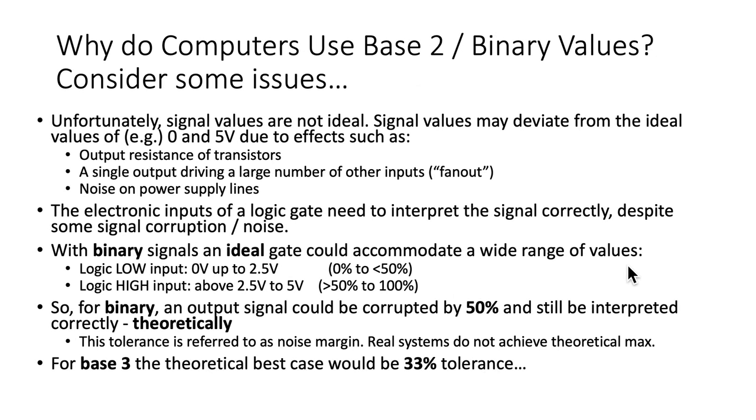So why do computers use base 2 or binary? Well, here are some issues to consider. Unfortunately, single signal values are not ideal. Signal values may deviate from ideal values of, for example, 0 and 5 volts, due to a variety of effects such as the output resistance of transistors, a single output driving a large number of other inputs (that's referred to as fanout), and noise on power supply lines, which is often quite prevalent in digital circuits. The electronic inputs of a logic gate need to interpret the signal correctly despite some degree of signal corruption or noise.